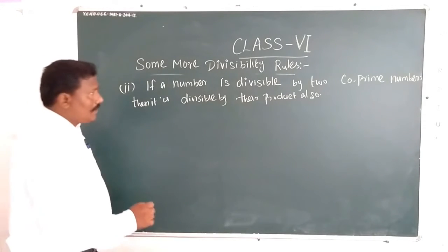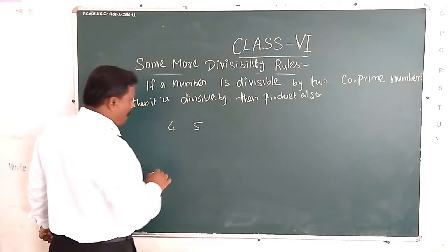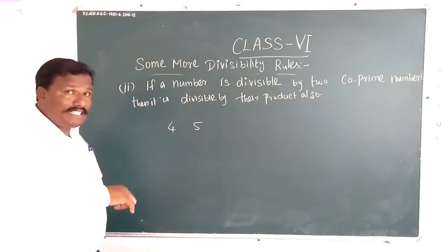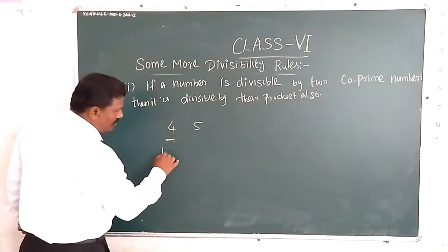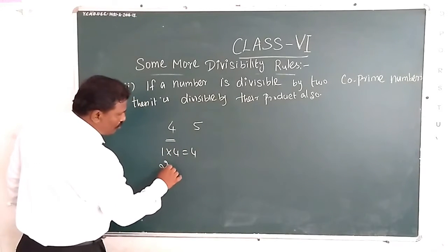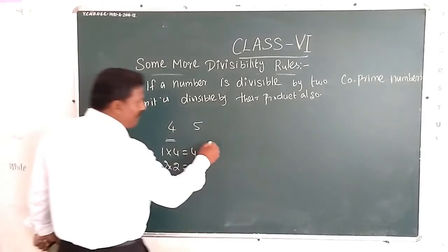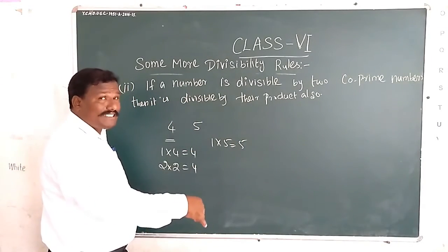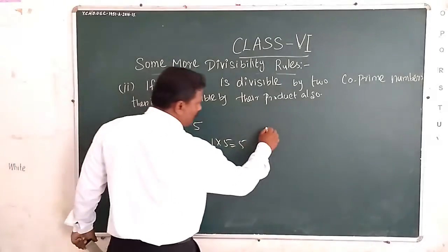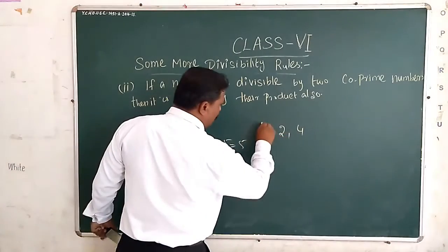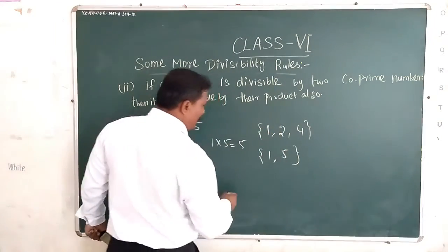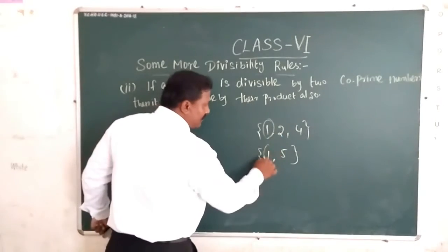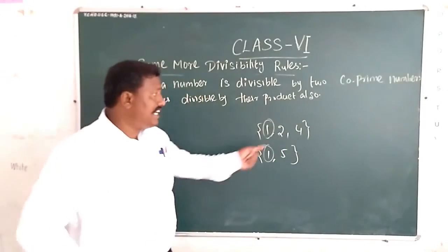For example, take 4 and 5. If you find the common factors of 4 and 5 — the factors of 4 are 1, 2, and 4; the factors of 5 are 1 and 5. If you find the common factor, only 1 is the common factor of 4 and 5.